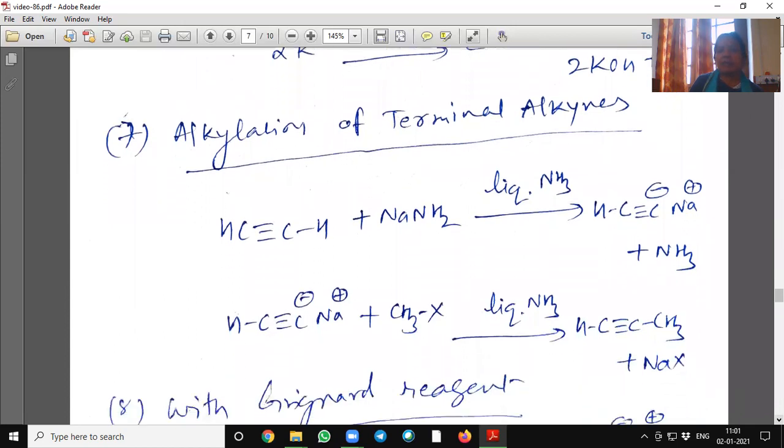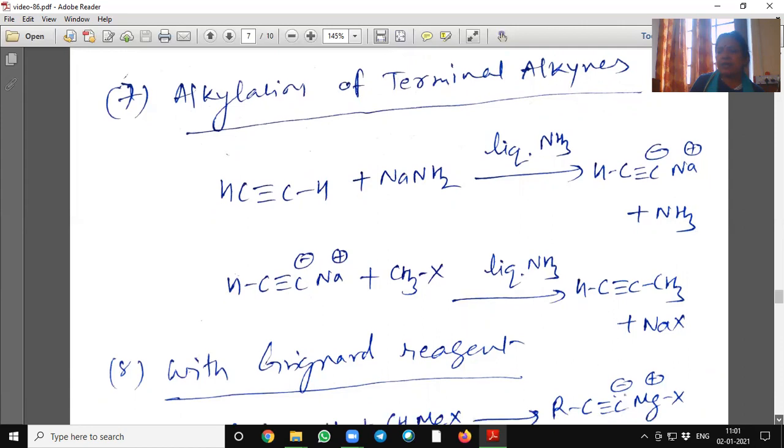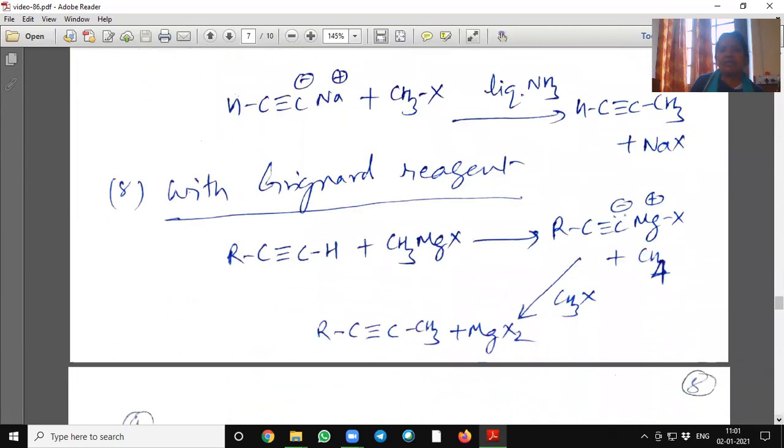And then this intermediate on hydrolysis will give two moles of potassium hydroxide. Alkylation of terminal alkynes. This terminal alkynes also we can alkylate. First, we will form salt and then the salt when reacted with alkyl halide, it will give us higher alkynes. With Grignard reagent, alkynes when reacted with Grignard reagent, it will form higher alkynes.